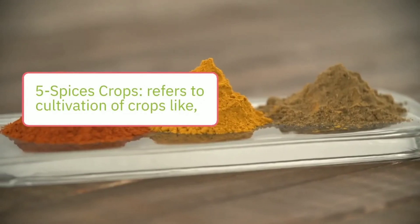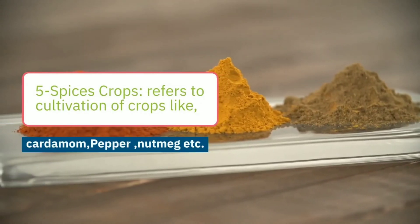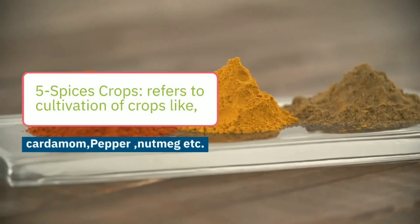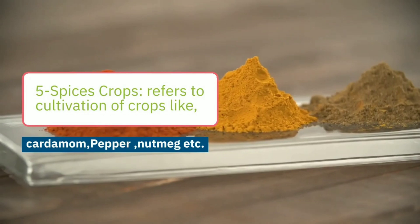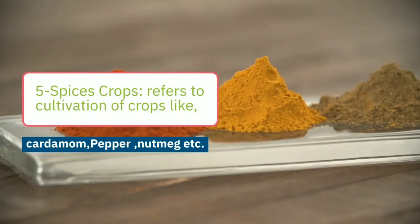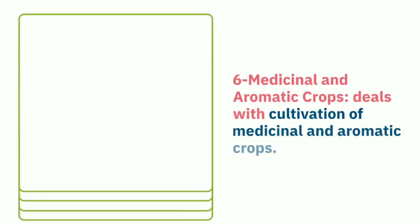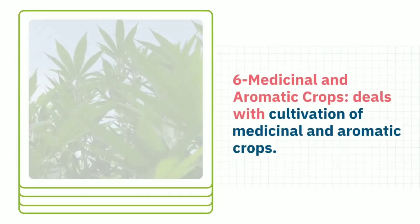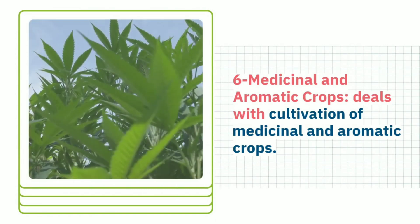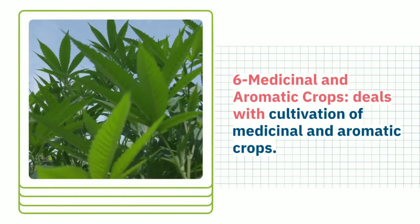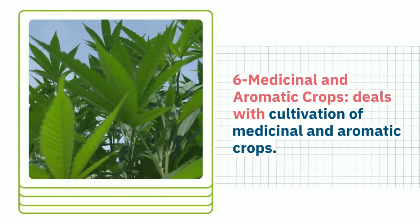The fifth branch is spices crops. It refers to cultivation of crops like cardamom, pepper, nutmeg, etc. The sixth branch is medicinal and aromatic crops. It deals with the cultivation of medicinal and aromatic crops.